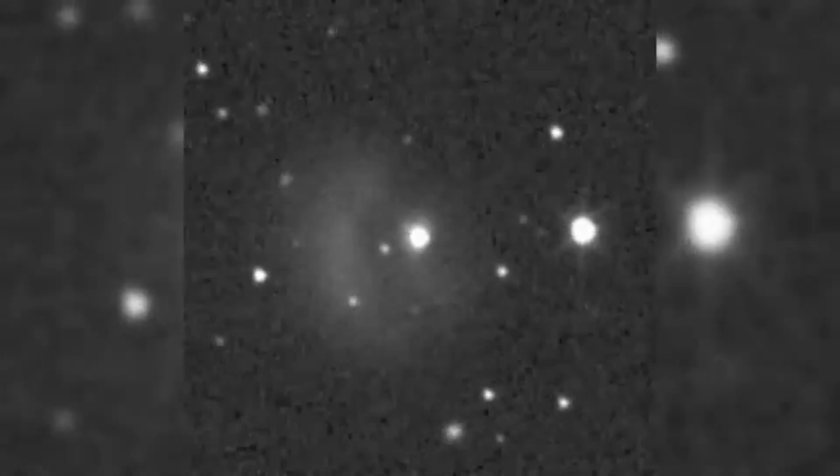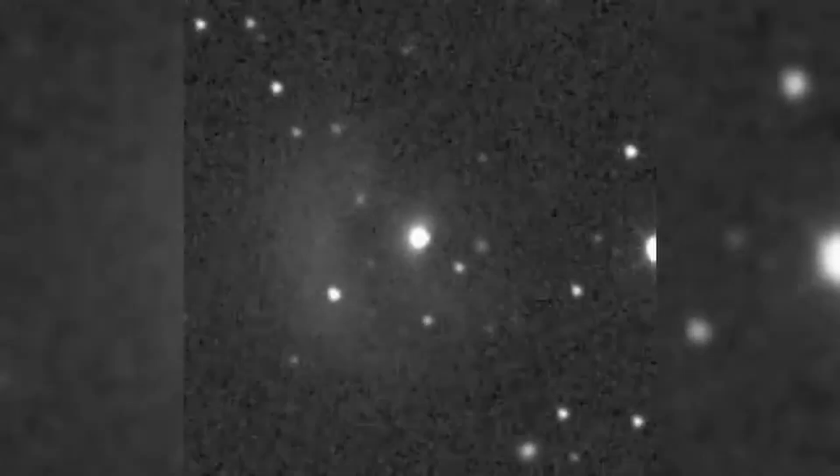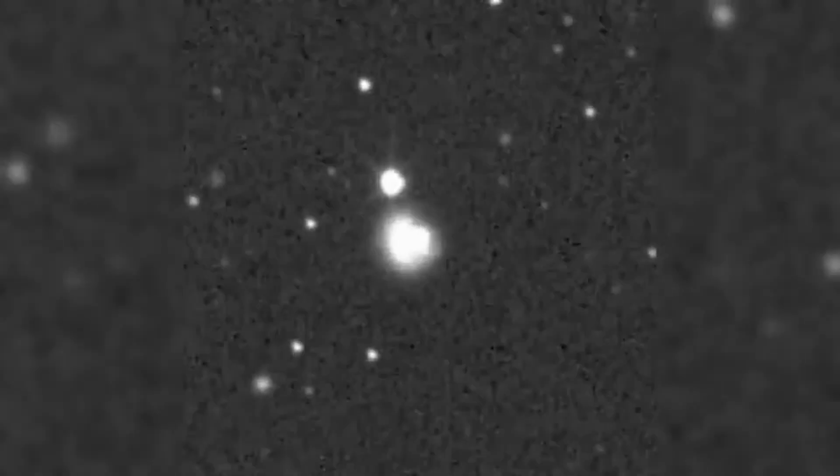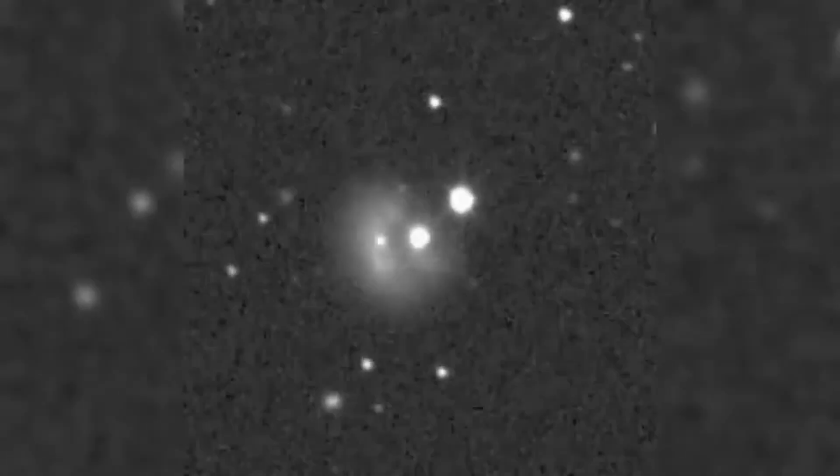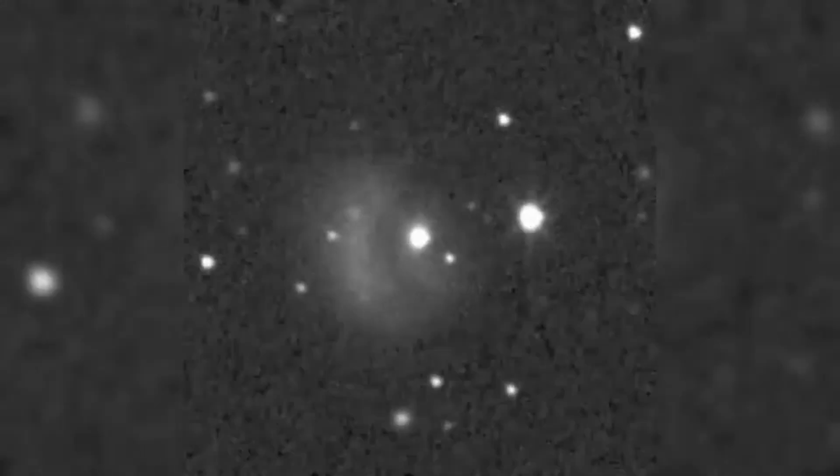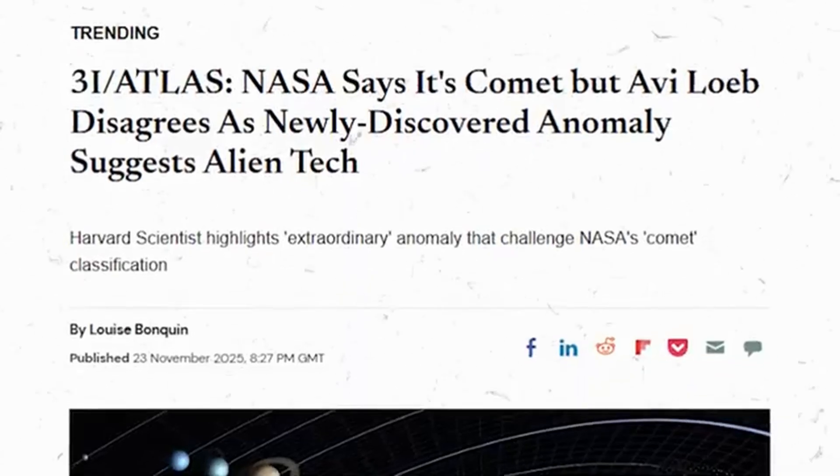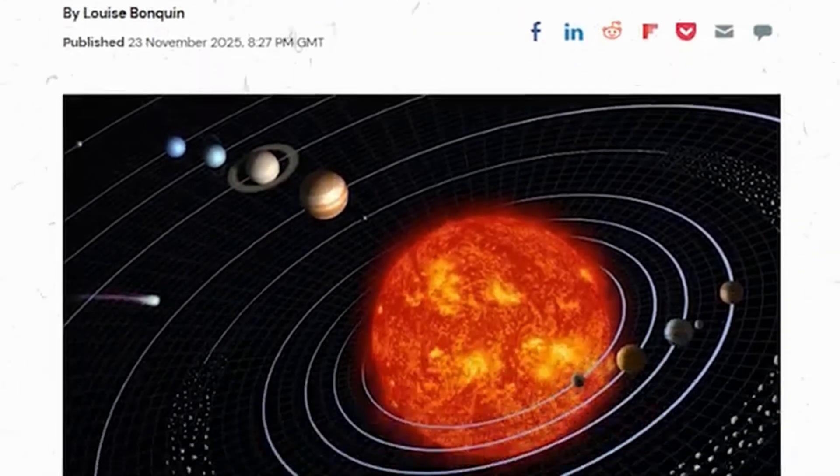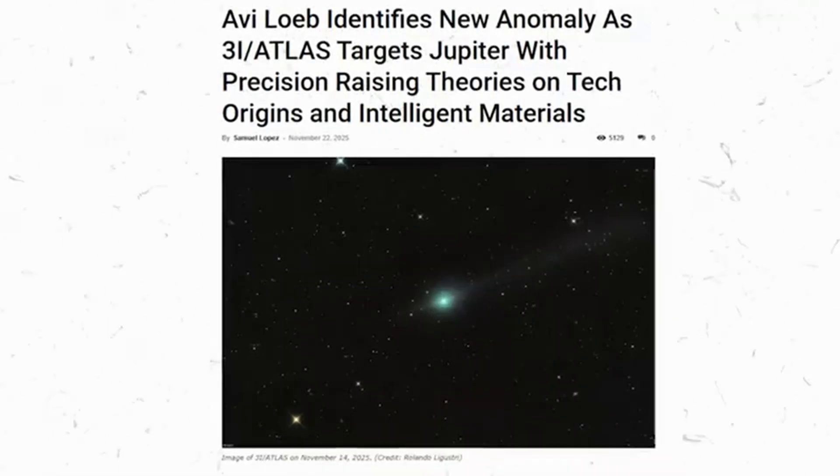Natural comets experience this all the time. As they approach the Sun, volatile materials warm up and sublimate, producing jets of gas and dust. These jets act like natural thrusters, giving small pushes that shift the trajectory. But natural outgassing is chaotic. The location of volatile pockets, the orientation of rotation, the distribution of sunlight, all these variables create messy, unpredictable jet activity.